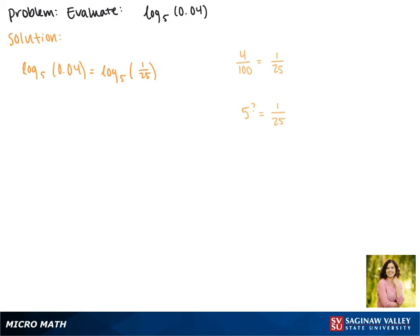Since 5 squared is 25, and here we have 25 in the denominator, we must be raising it to the negative second power to get it into the denominator. So this gives us negative 2.